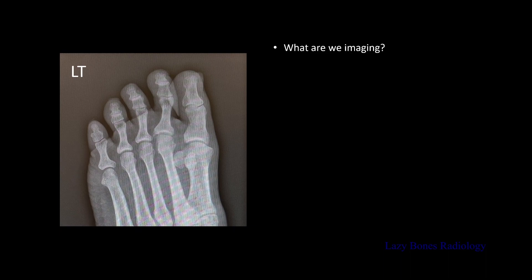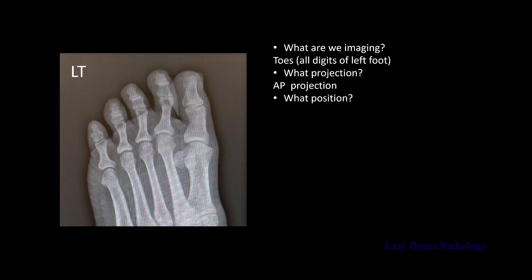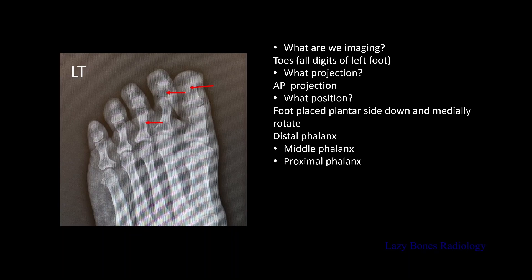Now let's practice. What are we imaging? We're imaging all the toes of the left foot. What is the projection? This is an AP oblique projection. What is the position? Foot is placed plantar side down, immediately rotated. Now let's practice your anatomy: distal phalanx, middle phalanx, proximal phalanx, the distal interphalangeal joint, the proximal interphalangeal joint, the metatarsal, the metatarsal phalanx, and finally the sesamoids.